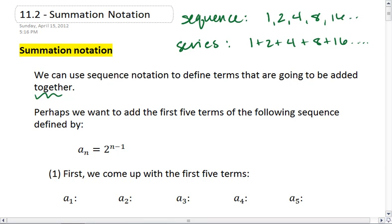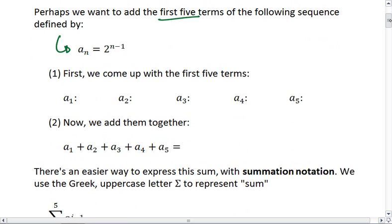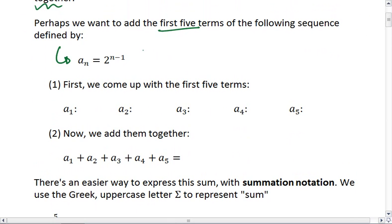All right, so let's look at an example. What if we wanted to add the first five terms of this sequence? First thing we want to do is come up with the first five terms. We use this definition, we come up with a₁ by plugging in 1. So we get 2 to the 1 minus 1, which is 2 to the 0, which is just 1.